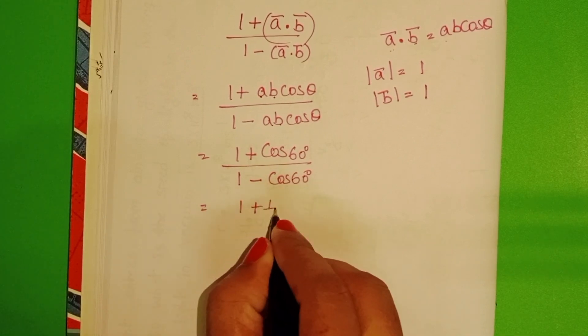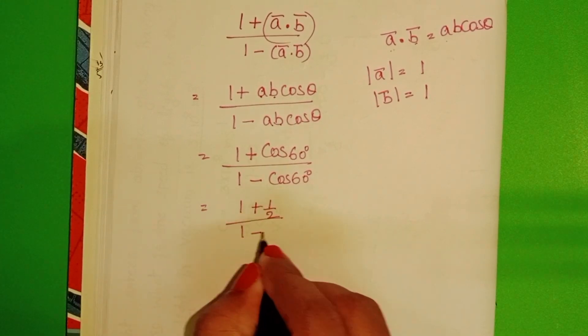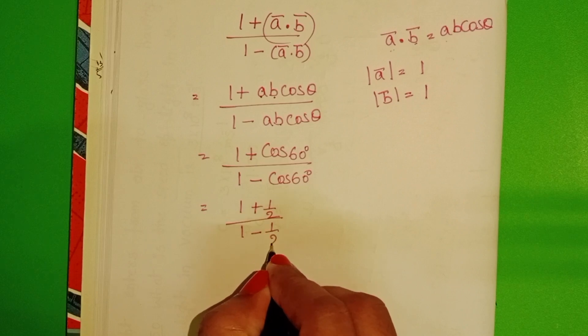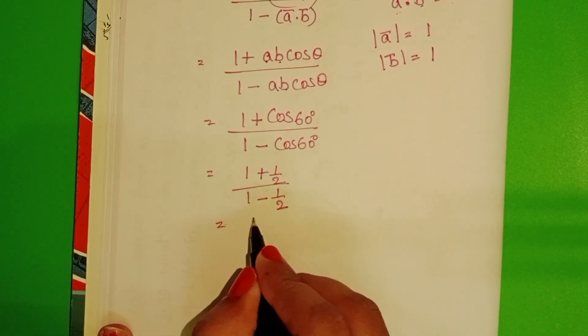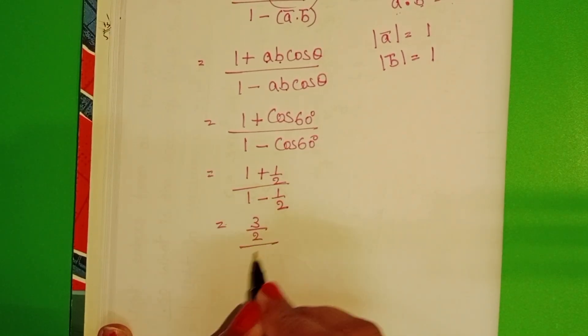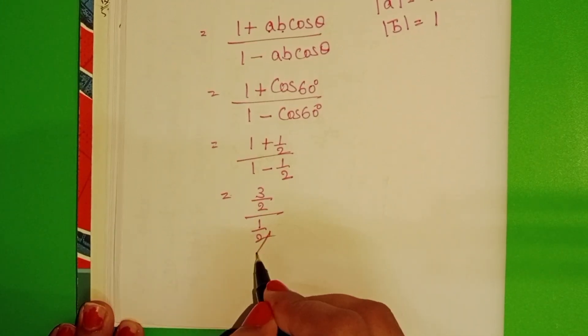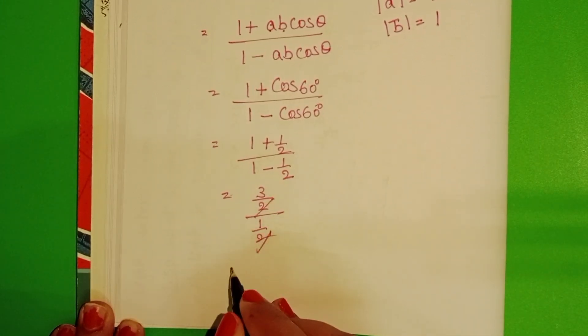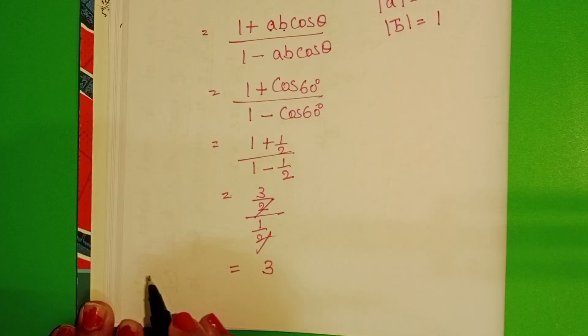This gives us (1 + 1/2) / (1 - 1/2), which equals (3/2) / (1/2). The 2s cancel, and the answer is 3.